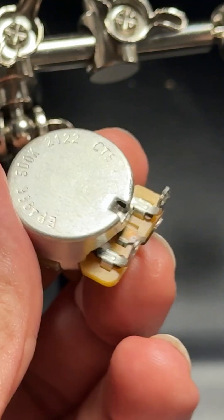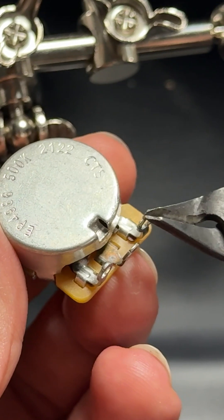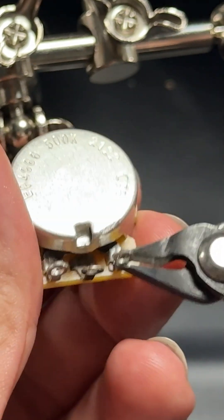The next step is to bend the first lug that we're going to solder here, bending it against the casing.